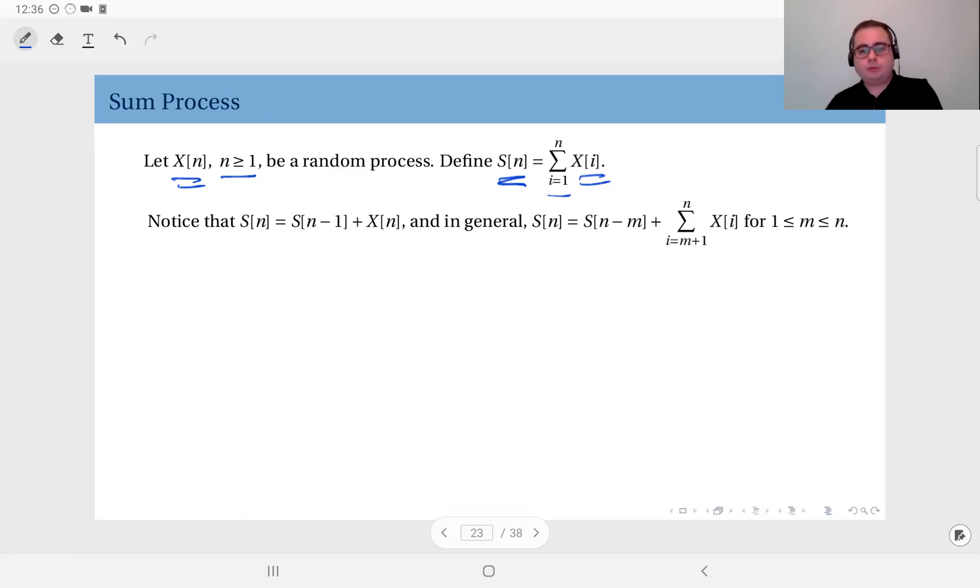Now, one key observation here is, for instance, you can write S of N as S of N minus 1, which has the sum of X values from 1 up to N minus 1. So if you add X of N to that, you get S of N. This is a key property. And in general, we can, in fact, not only N minus 1, but we can write this S of N as S of N minus M.